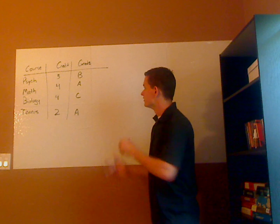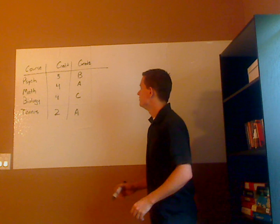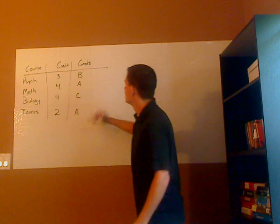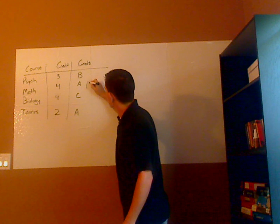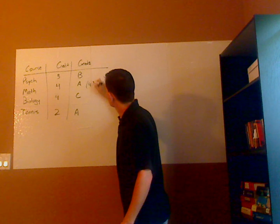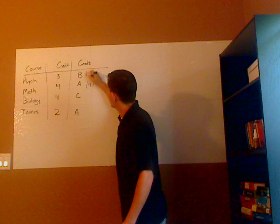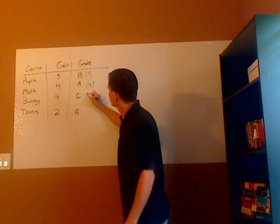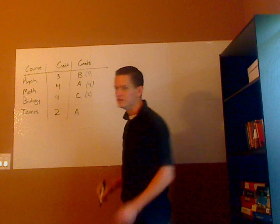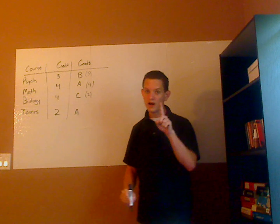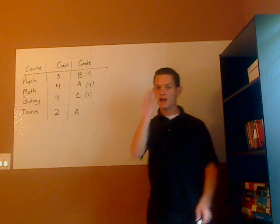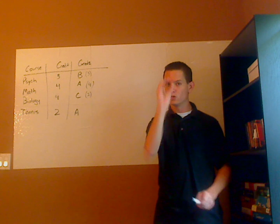So this is a typical GPA scale: A's are worth four points, B's are worth three points, C's are worth two, D's are worth one, and F's are worth zero.